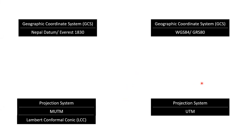We regularly use three different projection systems as per our requirements. The first one is the Universal Transverse Mercator (UTM) projection system. UTM is designed to map the whole globe, and we have modified the UTM system for surveying and mapping purposes in Nepal, calling it the Modified UTM (MUTM) system.